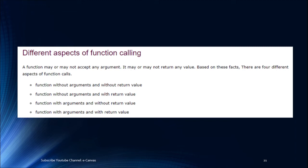We will see the first section. In the first video part we have done, we will set the return type and the arguments. In the second video, we will set the return type — integer value return, float value return, void return. We will set the function with arguments and without return value, and with arguments and with return value.